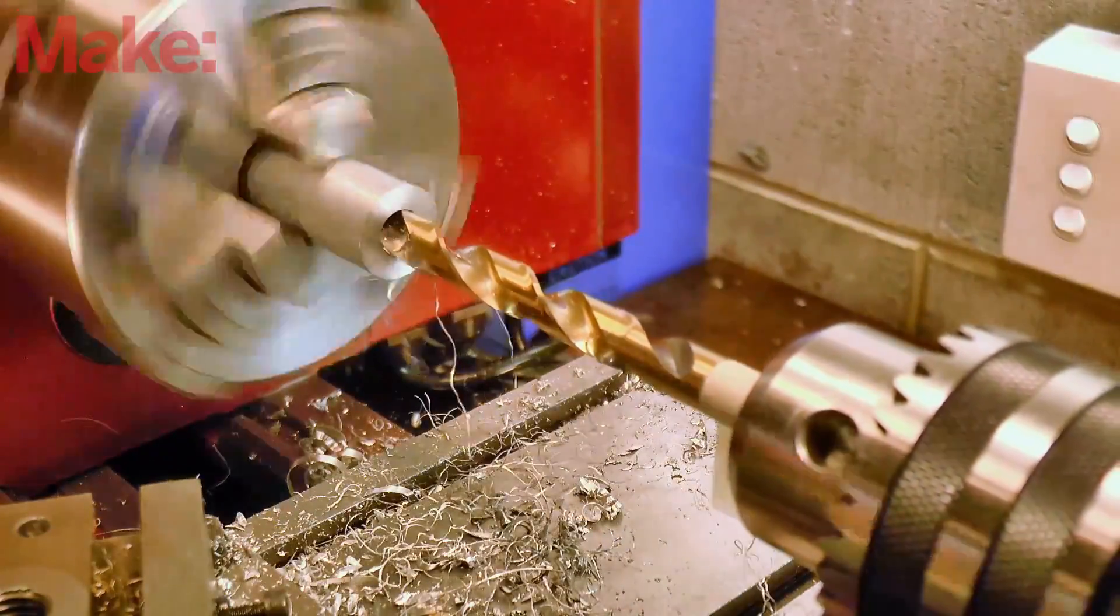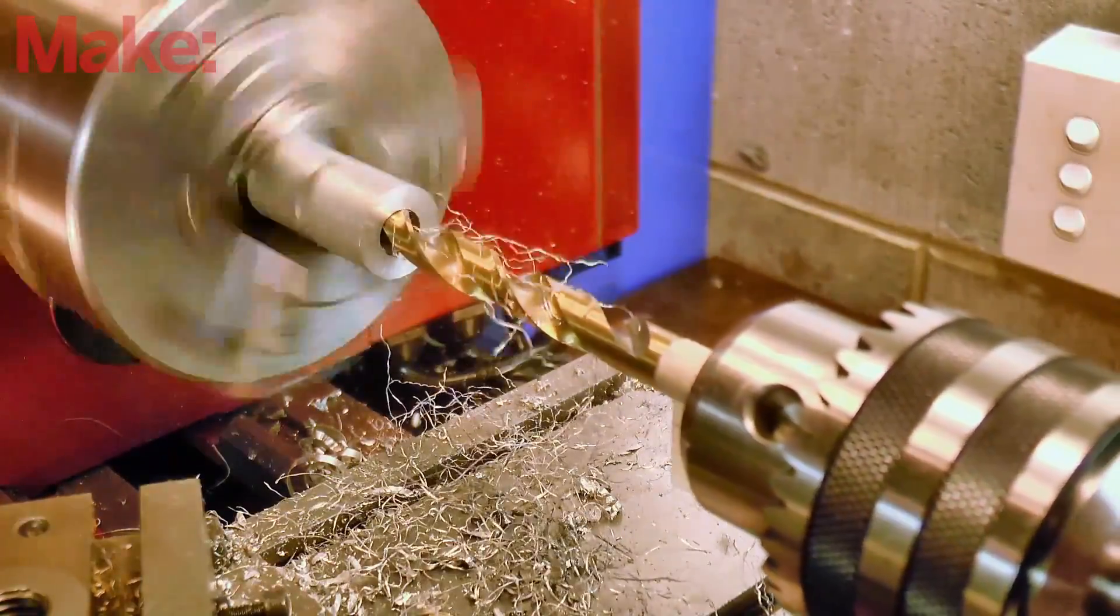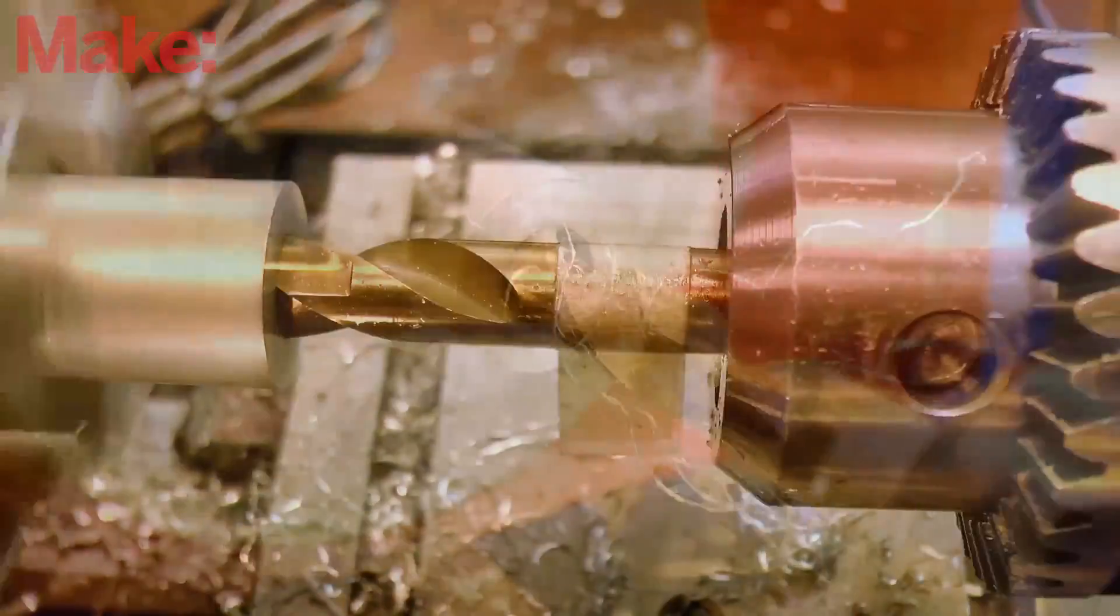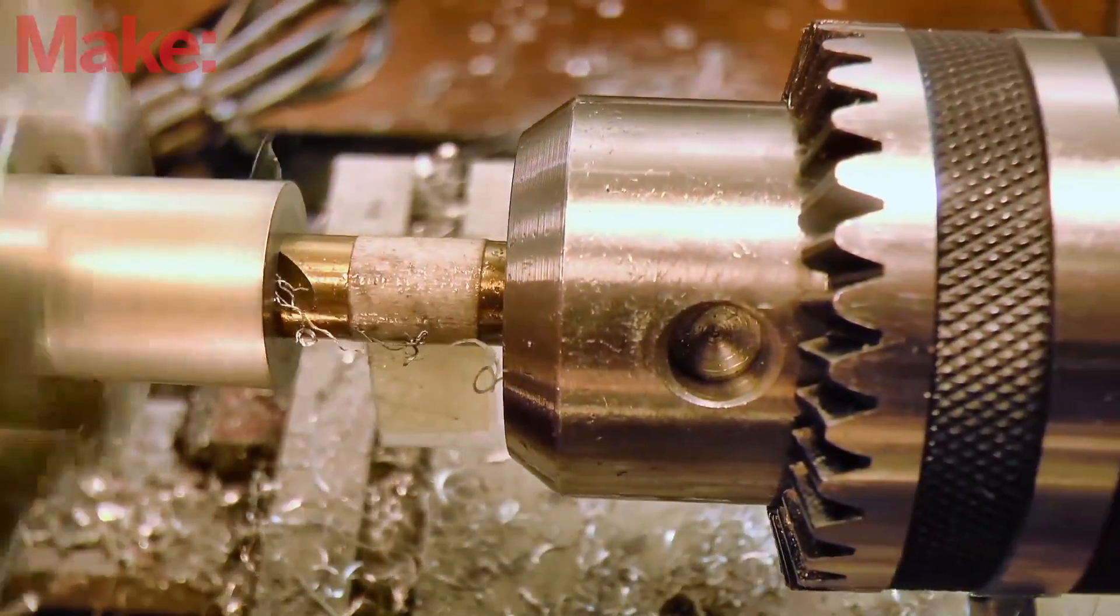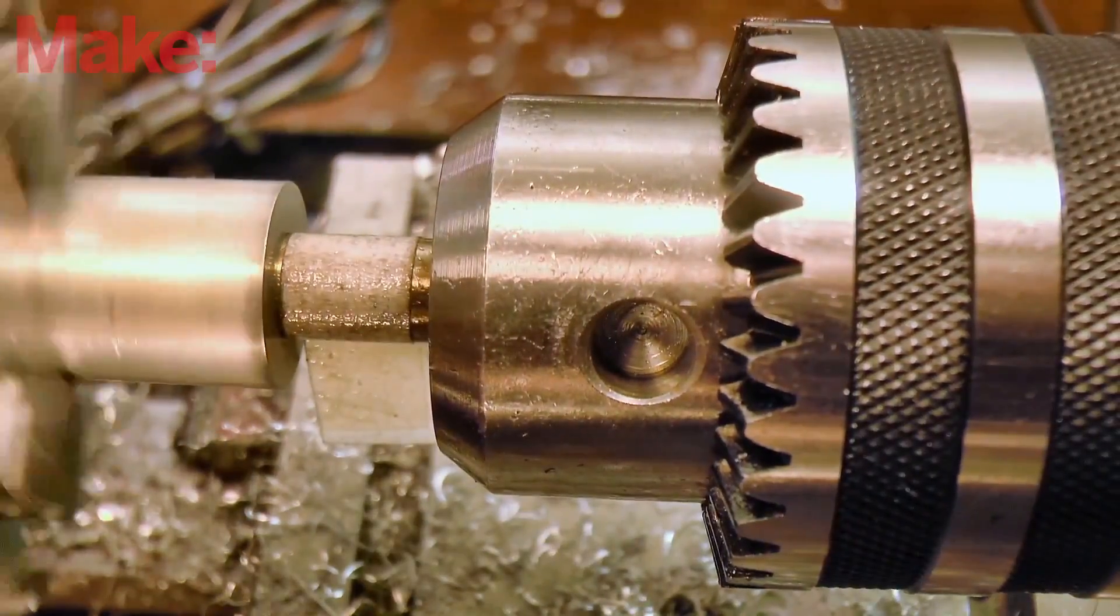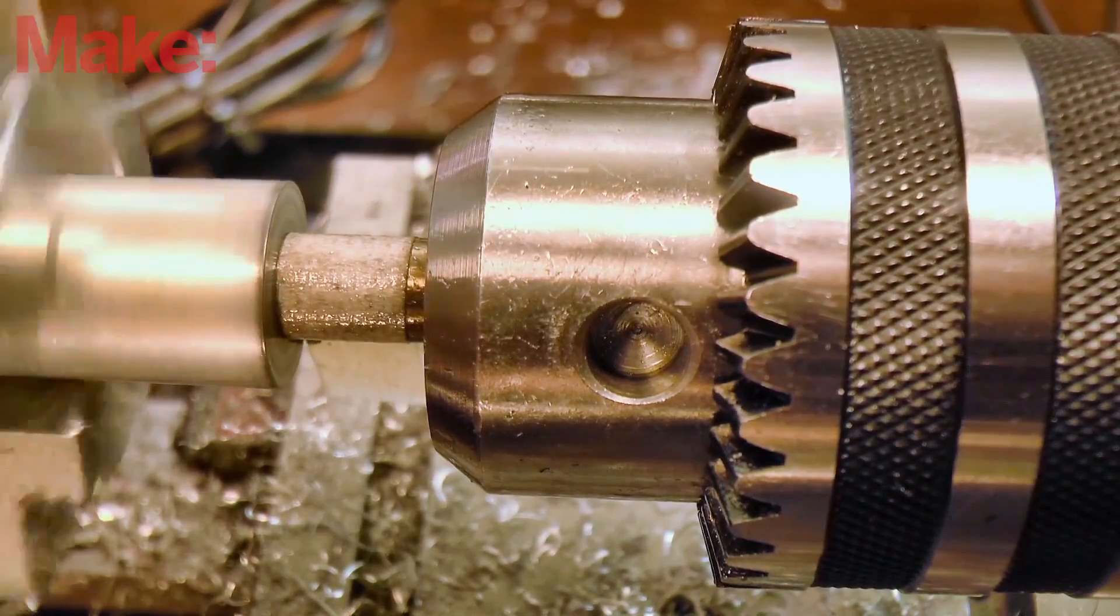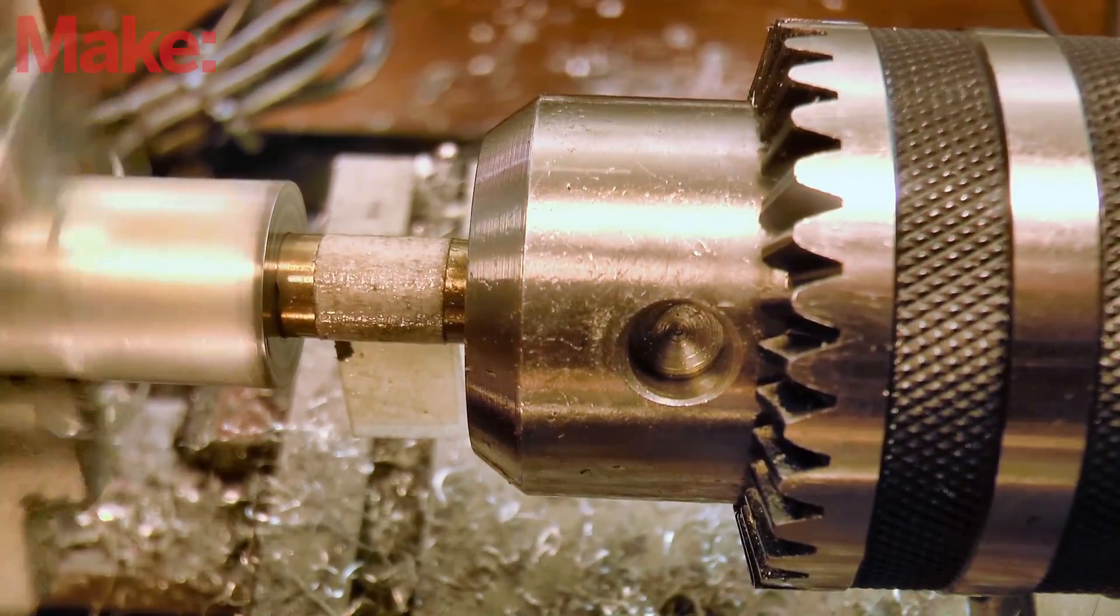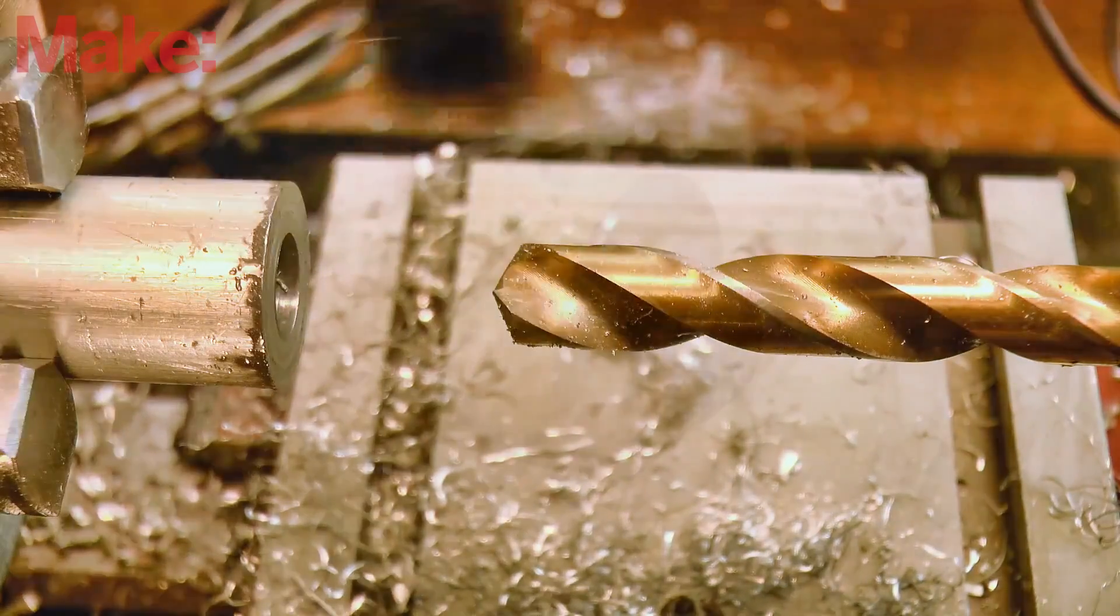Now ideally we'd be using a reamer for this final sizing of the bore, but I want to avoid specifying an expensive cutter like that, and for this application, I've found that a standard twist drill gives a perfectly adequate surface finish. And that's where we'll leave the cylinder for now.